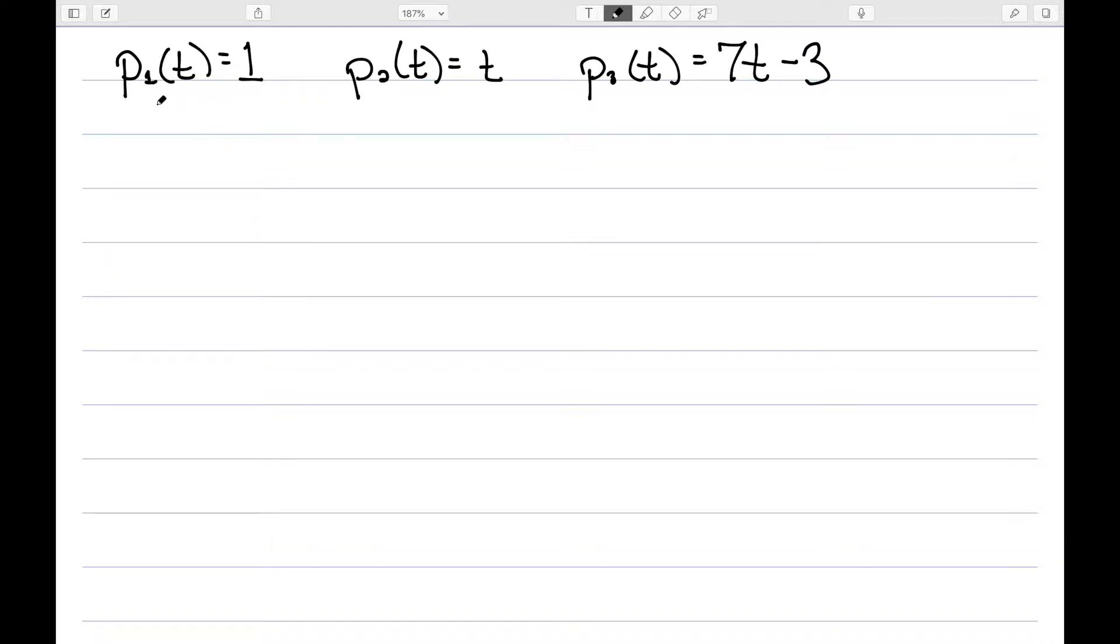Let's look at polynomials. Here I have the polynomial p1 equal to 1, p2 is 2, and p3 is 7t minus 3.